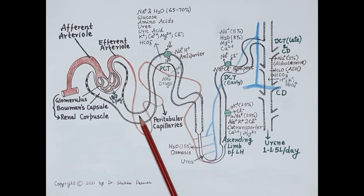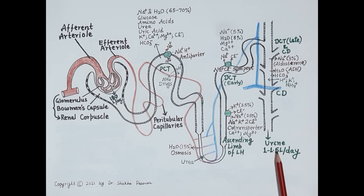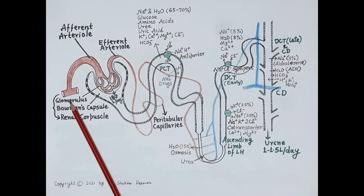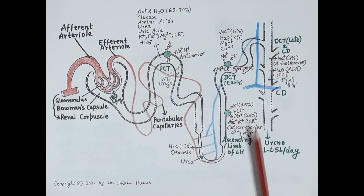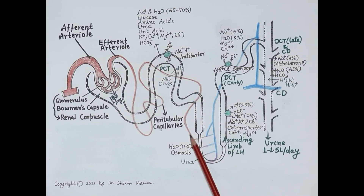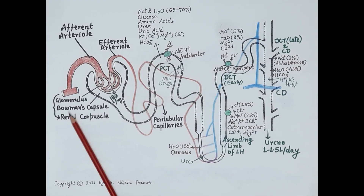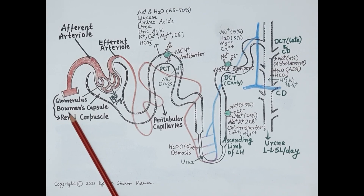Diuretics are agents that act upon the kidney and increase the volume of urine, thereby reducing blood volume. Diuretics decrease reabsorption of sodium and water from the lumen into the peritubular capillaries, causing a net loss of sodium and water in the urine. Since they reduce blood volume, diuretics are primarily useful in the management of edema and hypertension.